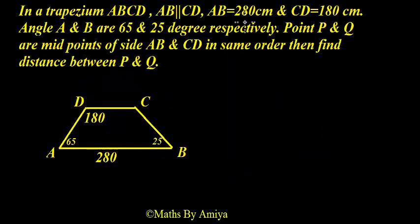I have drawn a figure according to the question. ABCD is a trapezium, AB is 280 cm, CD is 180 cm, angle A is 65, angle B is 25. Can we say 65 plus 25 equals 90? So if we extend the line AD and BC, we are making a right angle somewhere above the line DC. Let's draw the figure.